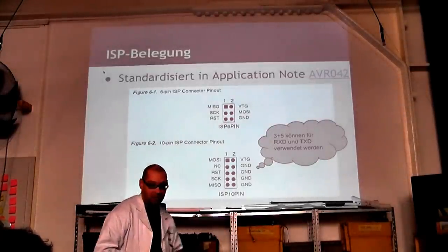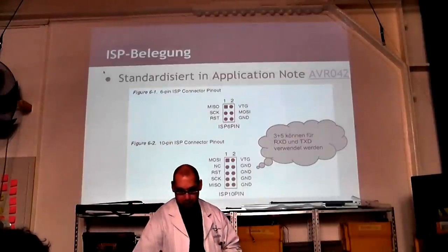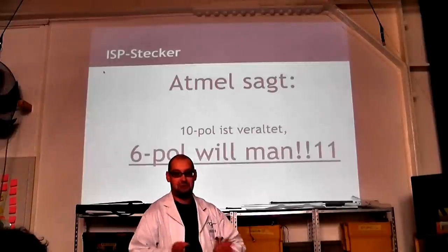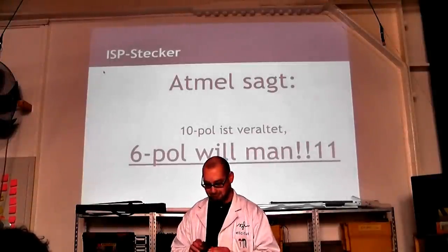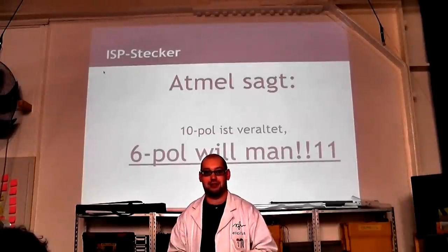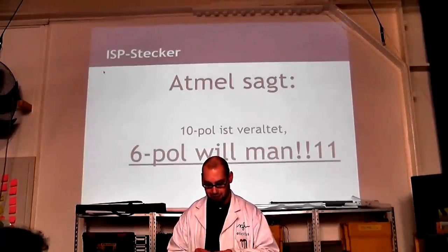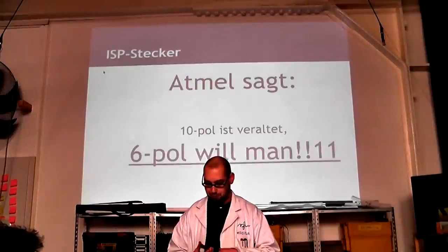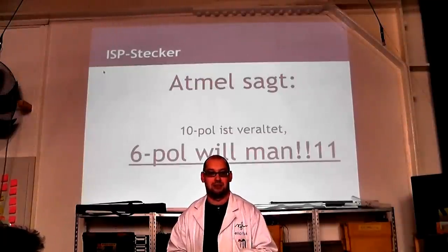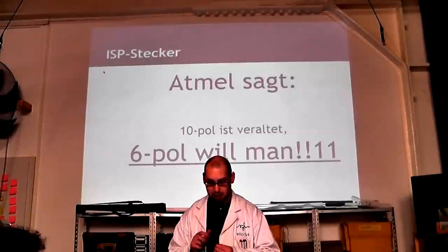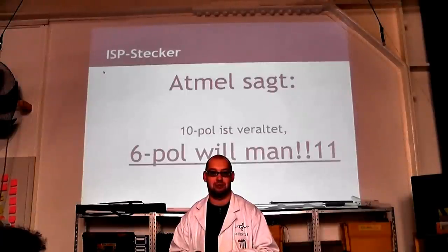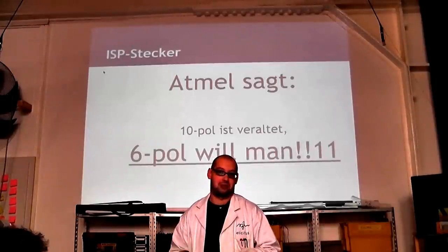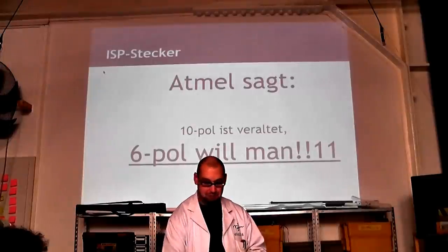Das ist, wie man seine Atmel-Controller programmiert. Atmel sagt: 10-polig ist veraltet, 6-polig will man. Hat vielleicht einfach den Grund, weil RXD und TXD fast keiner nutzt. Der 6-polige braucht wesentlich weniger Platz auf dem Board. Also wenn ihr irgendwas Neues baut, einen 6-poligen – spart man ein bisschen Platz. Auch ein bisschen Routing-Aufwand von den Leiterbahnen her spart man sich. Also der 10-polige ist quasi Legacy, der 6-polige ist das, was man haben will. Sagt Atmel.